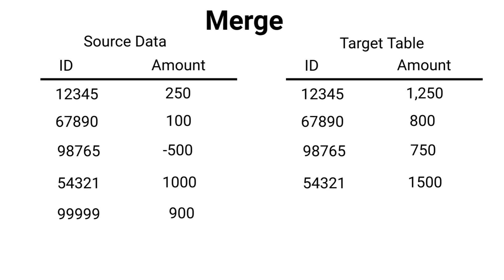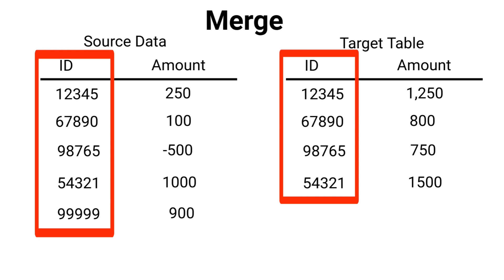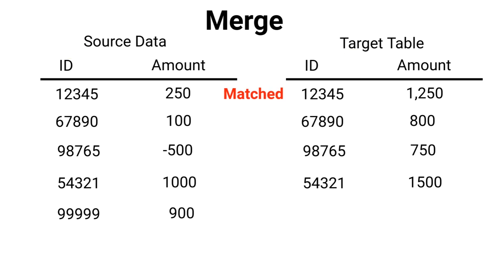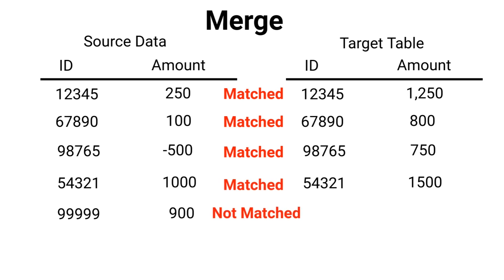With merge, what you do is you're joining or matching these data sets on certain values. Don't think of it like an inner join where you're dropping records. Think of it more as matching. So in this case, we would match based on our ID. And under certain conditions, we can make updates to the target table. Let's take a look at these data sets and look at some examples.